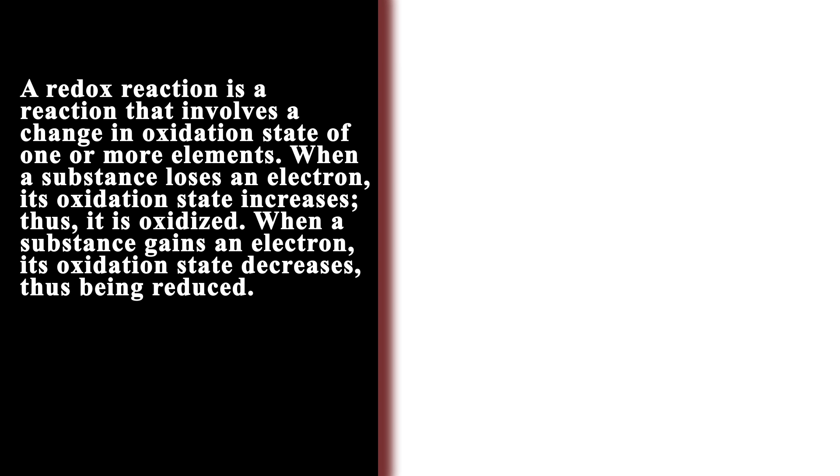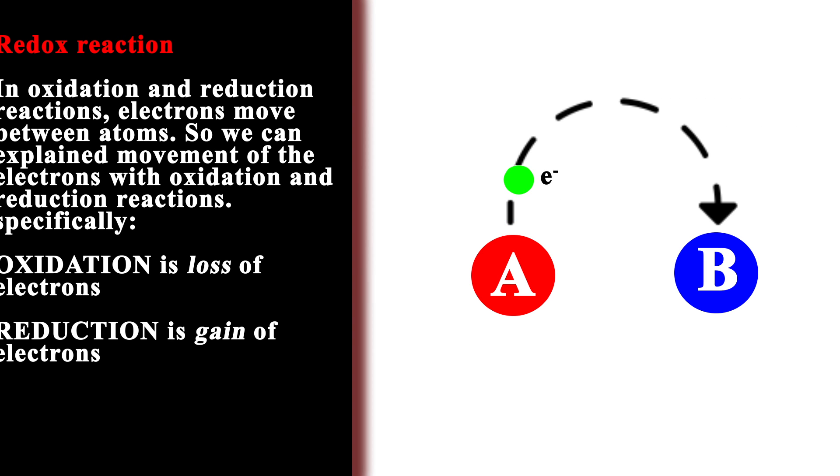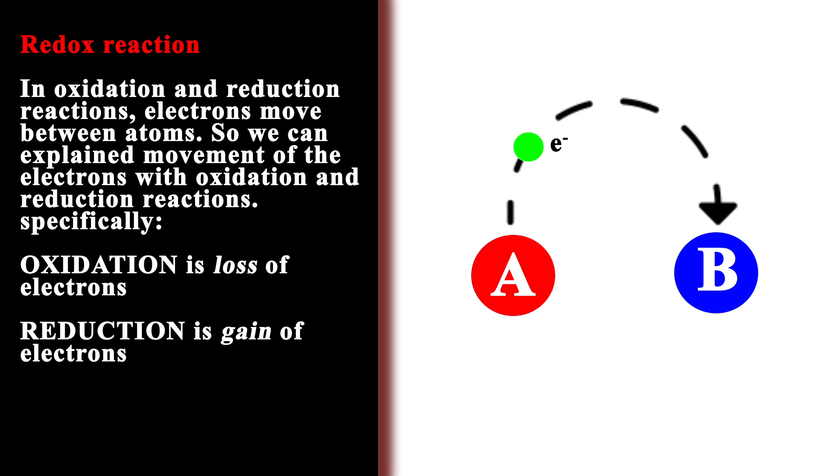When a substance loses an electron, its oxidation state increases; thus, it is oxidized. When a substance gains an electron, its oxidation state decreases, thus being reduced. In oxidation and reduction reactions, electrons move between atoms.